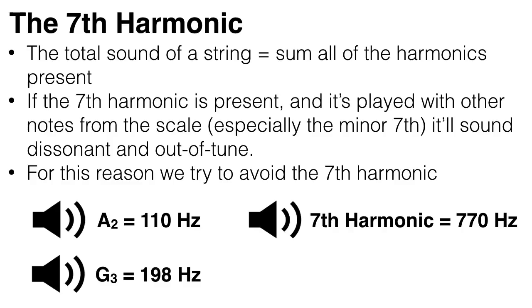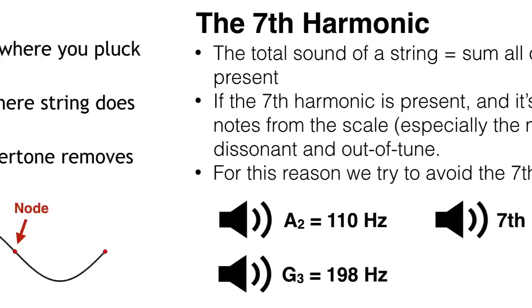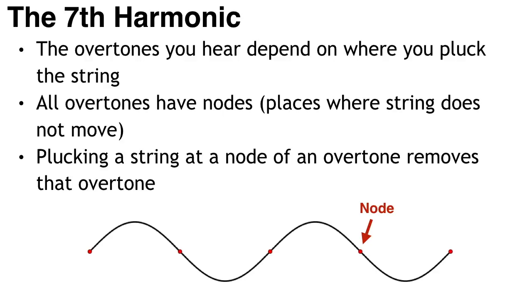For this reason, we try to avoid the seventh harmonic. And as we learned in a previous video, the overtones you actually hear depend on where you pluck the string. This is why plucking a string at different locations on a guitar will give you different sounds.